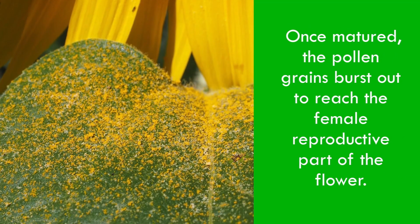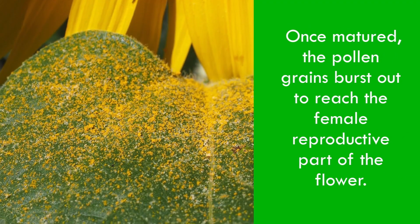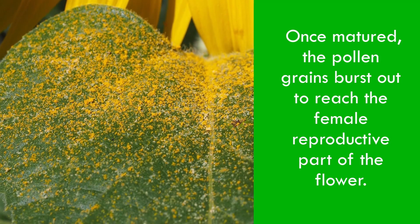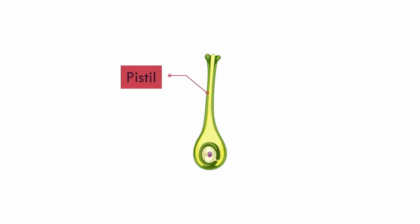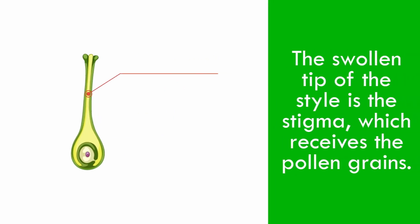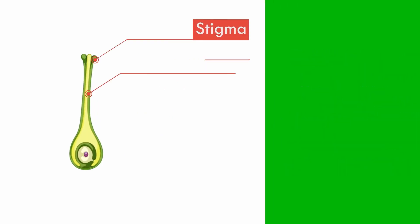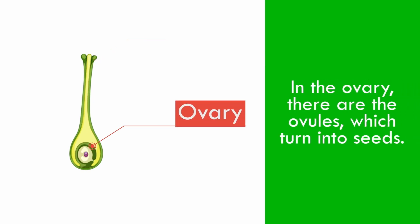Once matured, the pollen grains burst out to reach the female reproductive part of the flower. The genesium contains the pistil, which is composed of the tube that reaches the ovary. The swollen tip of the style is the stigma, which receives the pollen grains. In the ovary, there are the ovules, which turn into seeds.